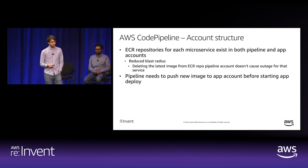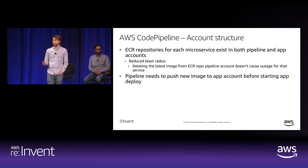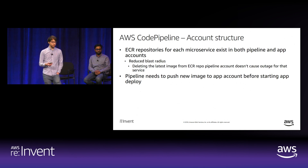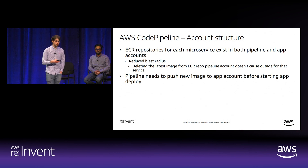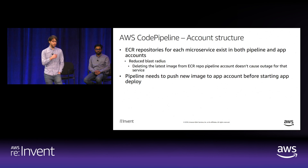For Onvio, Amazon ECR repositories were created in both the pipeline and application accounts to reduce the blast radius of deleting images. Even if an image is deleted from the pipeline account repository, no outage occurs because a copy is persisted in the application account. This means our pipeline must include an action to push the image from the pipeline account to the application account before beginning the app deploy.